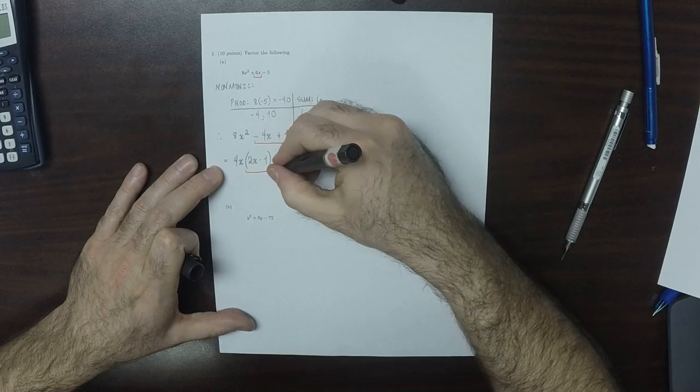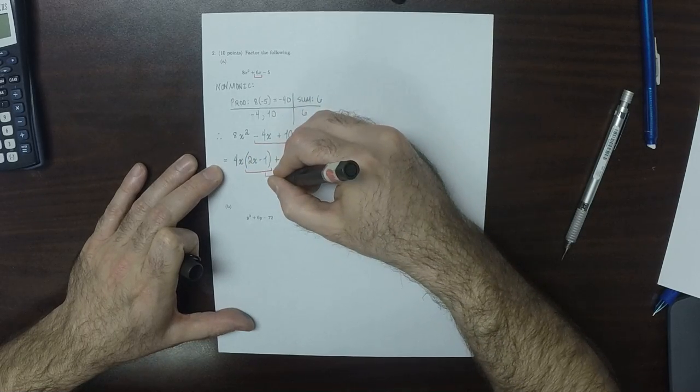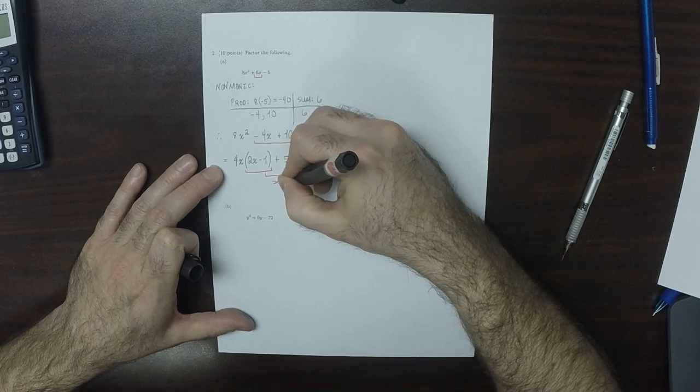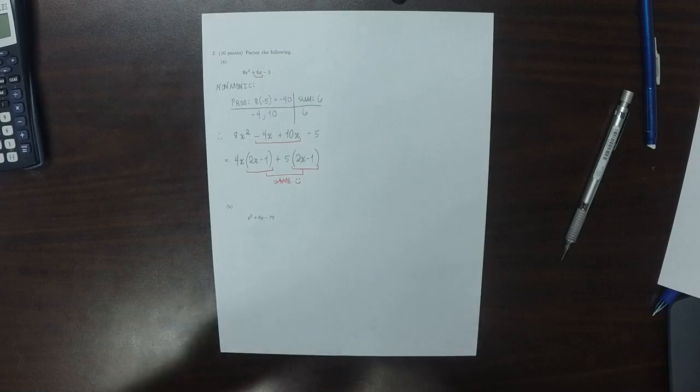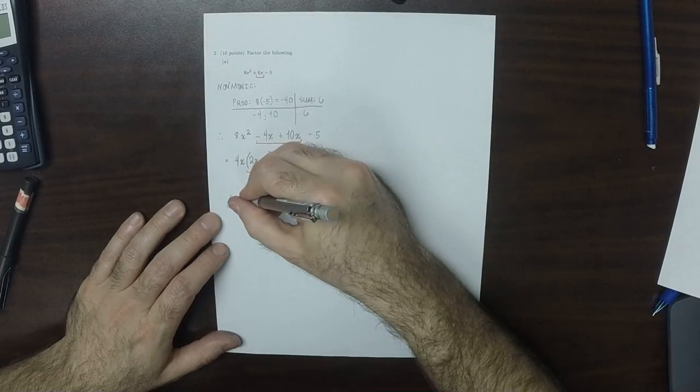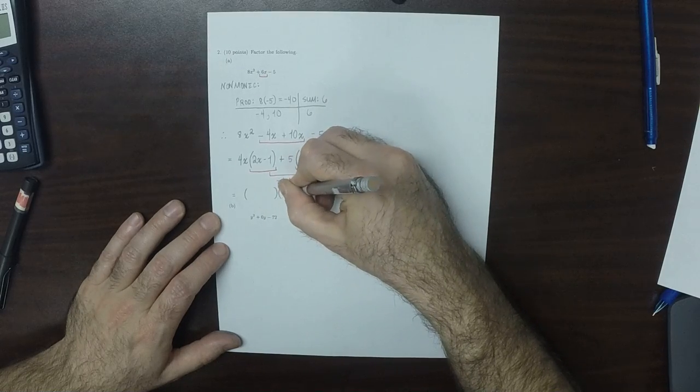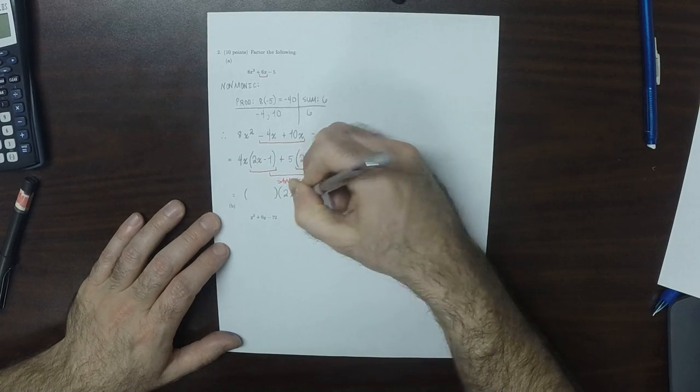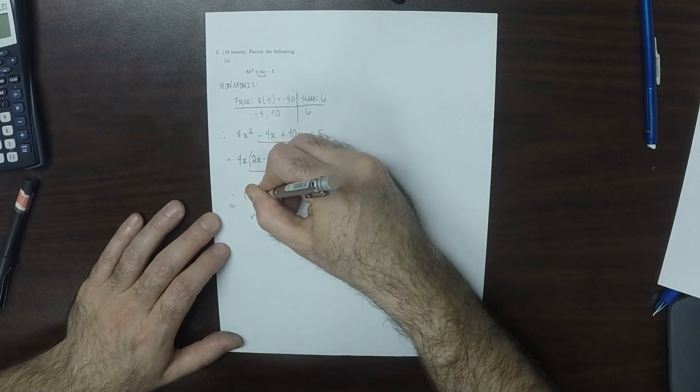These two are the same. We're so happy about that. Because that means we can factor out the 2x minus 1 on the right. And the term on the left, the factor on the left, is 4x plus 5.